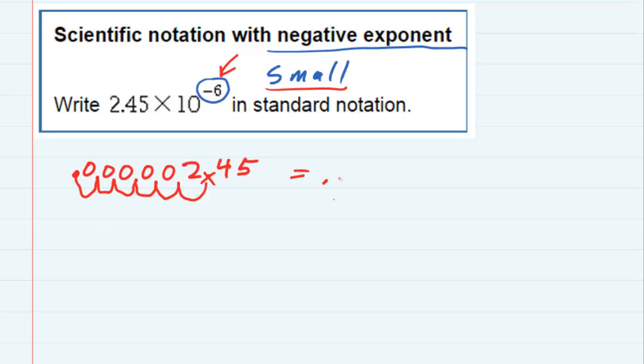It is now point one, two, three, four, five zeros, and then two, four, five.